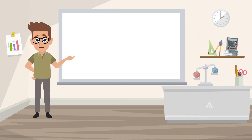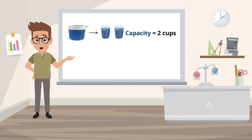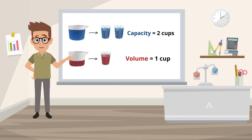Let's summarize what we have learned. To find the capacity of the container, we fill it up. The liquid fills up two cups, so the capacity of the container is two cups. We can also find different volumes of liquid in the container. This liquid in the container fills up one cup, so the volume of this liquid is one cup.